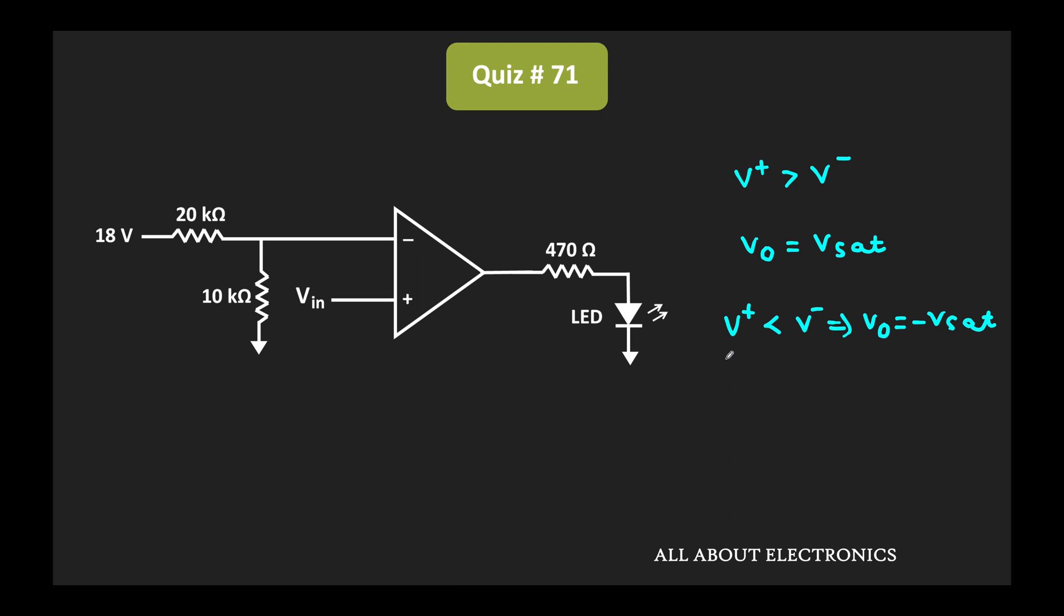So at that time this LED will be in the off condition. In this case, the LED will get turned on whenever the output of the op-amp is equal to positive saturation voltage, or in other words, whenever the voltage at the non-inverting terminal is greater than the inverting terminal.